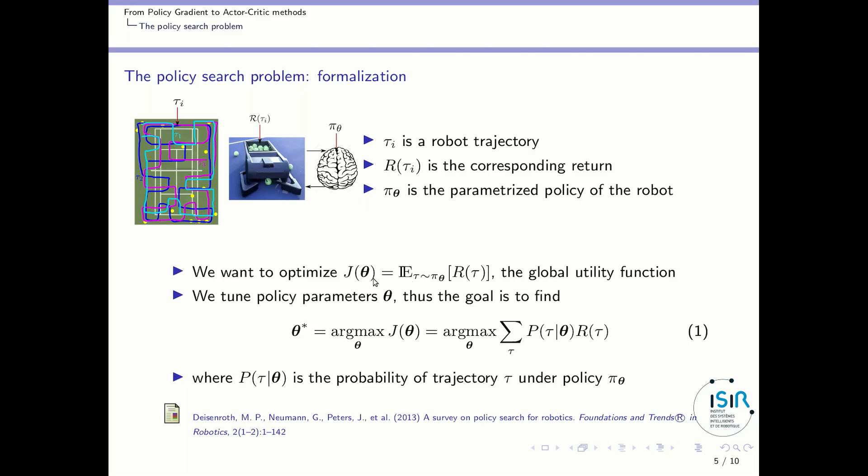And we want to optimize some performance depending on the parameters θ. We will note it J(θ). And that performance is the expectation over all the possible trajectories τ generated by the controller P_θ. So that's the expectation of the reward over the trajectory. And that's what we call the global utility function. Now we want to tune the policy parameters θ so as to maximize this function of θ. Thus our goal is to find the optimal policy parameters θ* which is the θ that gives the max J(θ). And it can be restated as a sum over all possible trajectories of the probability of a trajectory given the parameters θ times the reward of this trajectory.